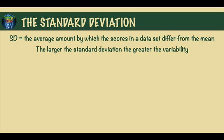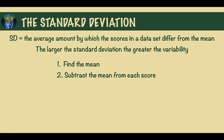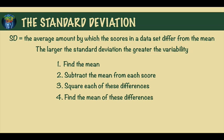So how do you compute a standard deviation? First you find the mean. Then you subtract the mean from each of the scores. Next you square each of these differences. Then you find the mean of these squared differences. And finally you find the square root of this mean. And voila, you have your standard deviation.